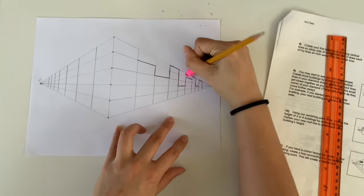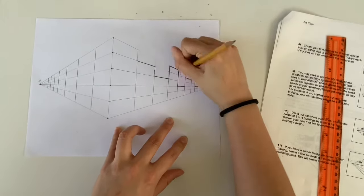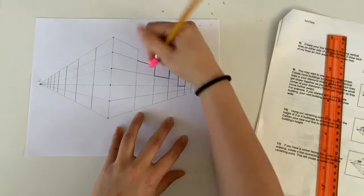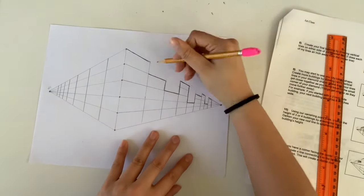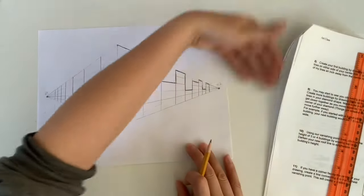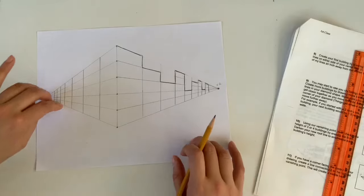Now to help with any confusion you always want to go in and erase all of these extra lines that we have there. When I'm done I'm gonna do the same thing on the other side but I'm gonna choose different building heights.